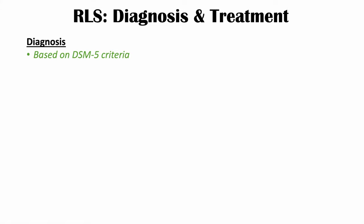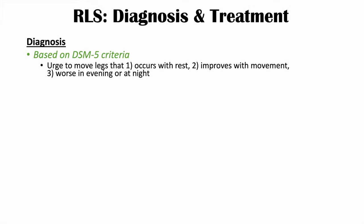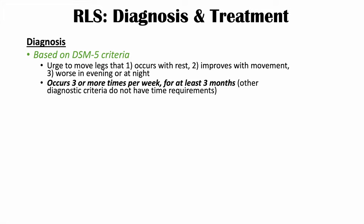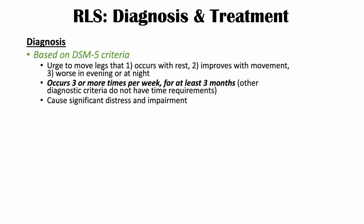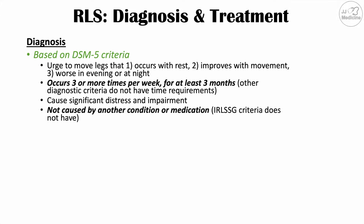The diagnosis is based on DSM-5 criteria. The urge to move legs must: one, occur with rest; two, be improved with movement; and three, be worse in the evening or at night. These symptoms must occur three or more times per week for at least three months. Additionally, the symptoms must cause significant distress and impairment, and must not be caused by another condition or medication.